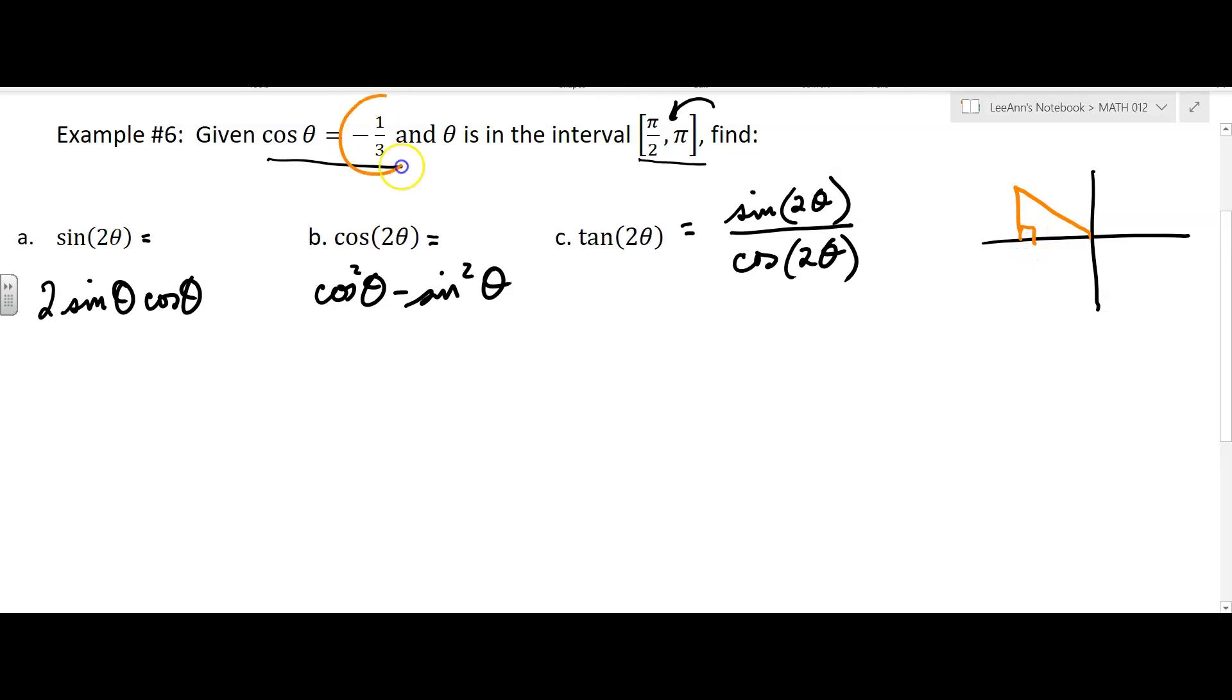And then I know the cosine, so I know adjacent over hypotenuse, so I'm going to say this is negative 1 and this is 3. The hypotenuse has to be positive. And you can see, I'm in the second quadrant, so the adjacent must be negative 1, or the x if you want to think of it that way.